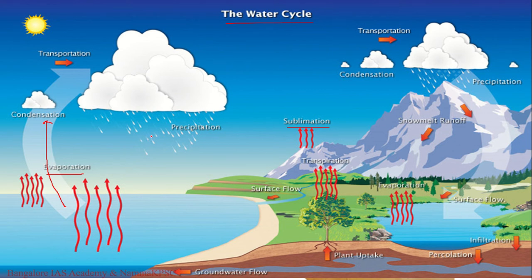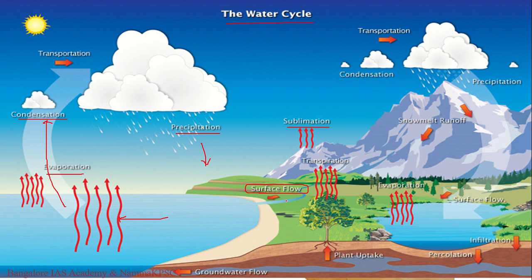Over time, water vapor in the atmosphere condenses into clouds and eventually comes down as precipitation. When water reaches the earth's surface, it has three options: it may once again evaporate and enter the atmosphere; it may flow over the surface and reach lakes, reservoirs, or oceans and evaporate again continuing the cycle; or it may percolate into the ground.